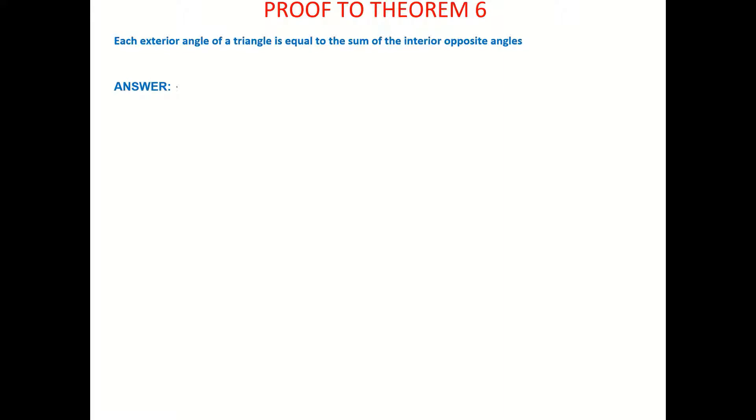Each exterior angle of a triangle is equal to the sum of the interior opposite angles. Just to give you a brief idea of what's happening here, it's when you have questions that look like this. All it's saying is that this exterior angle is always equal to the sum of the two opposite interior angles. So that's what this theorem is telling us and this is what we need to prove, that that is always the case.